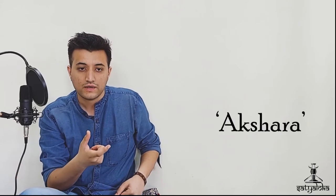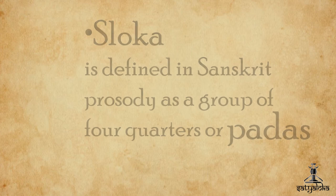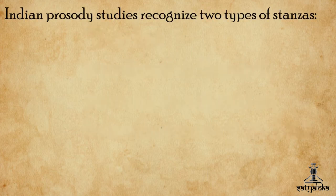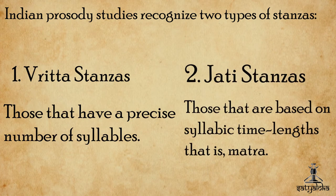Let's understand the basic terms before we proceed to Chandas. An Akshara or syllable in Sanskrit Prasadi is a vowel following one or more consonants, or a vowel without any consonants. A Shloka is defined in Sanskrit Prasadi as a group of four quarters or Padas. Indian Prasadi studies recognize two types of stanzas: Vrutta stanzas, which have a precise number of syllables, and Jati stanzas, which are based on syllabic time lengths, i.e., a Matra, and can contain varying numbers of syllables.